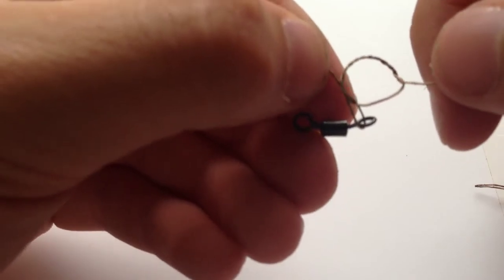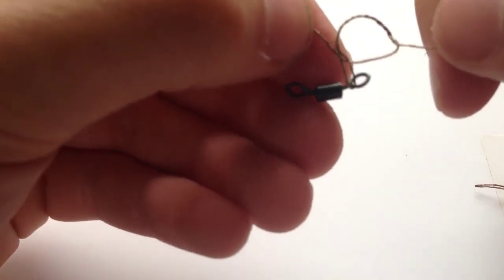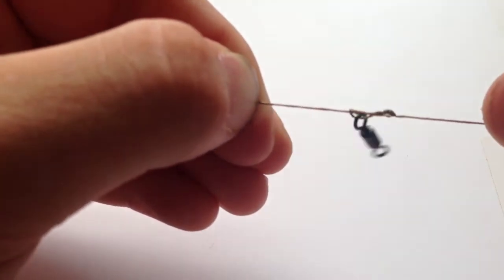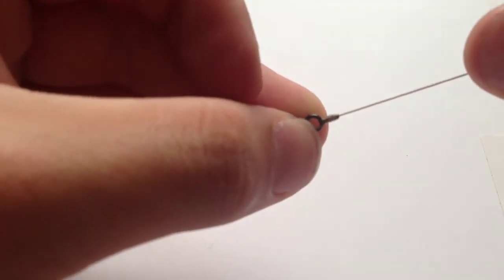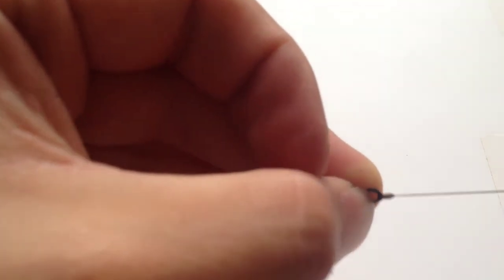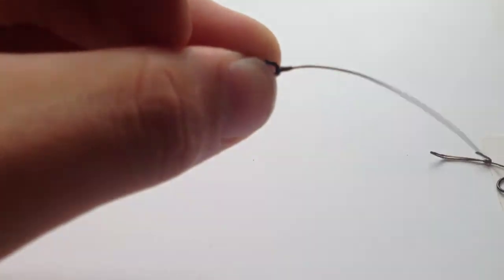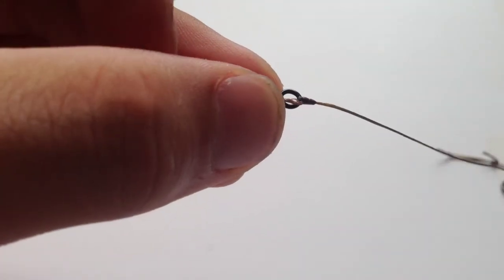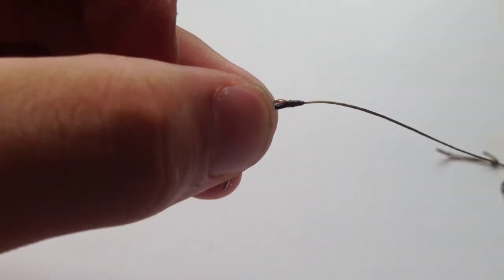Once it's through the first loop that you made, wet the hook link material. Then you can pull it tight towards the ring in the swivel. As you can see, that's created a nice coil pattern on the swivel. That's a really strong basic knot that almost anyone can tie, no matter if you're a beginner or just getting into the sport.